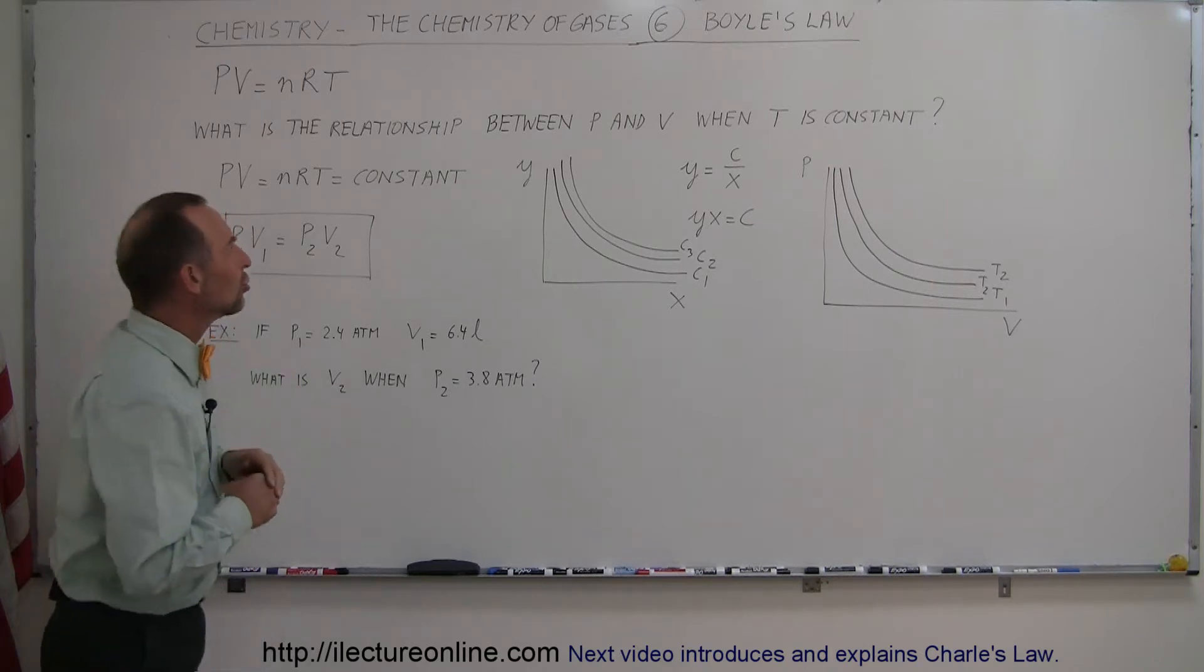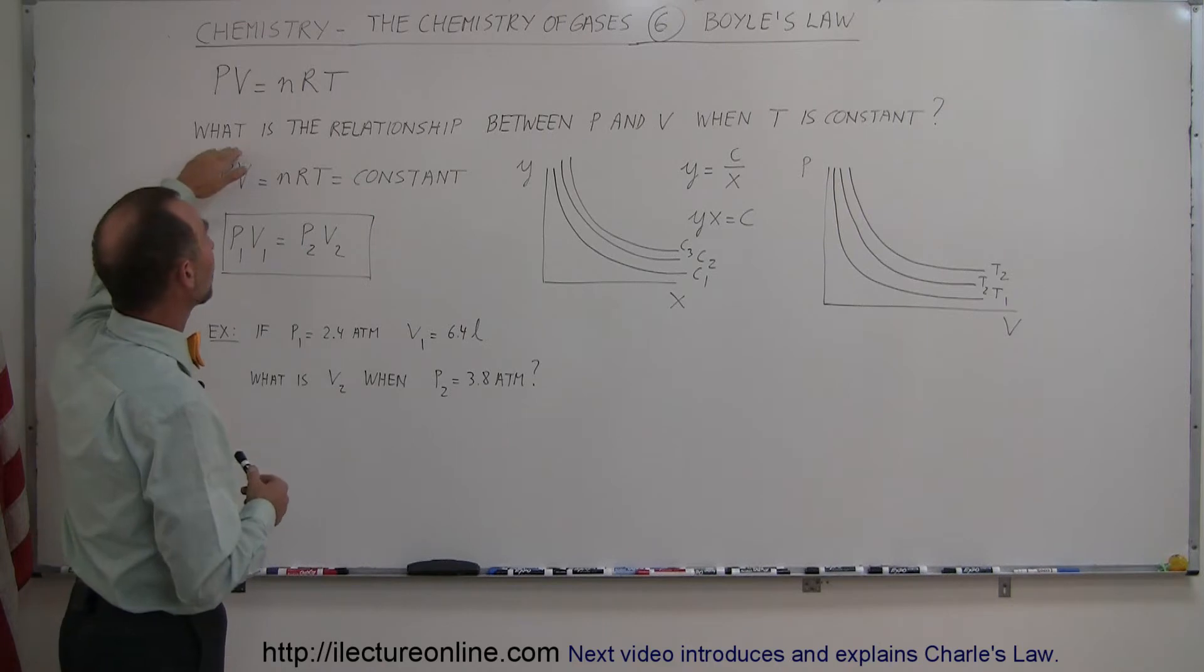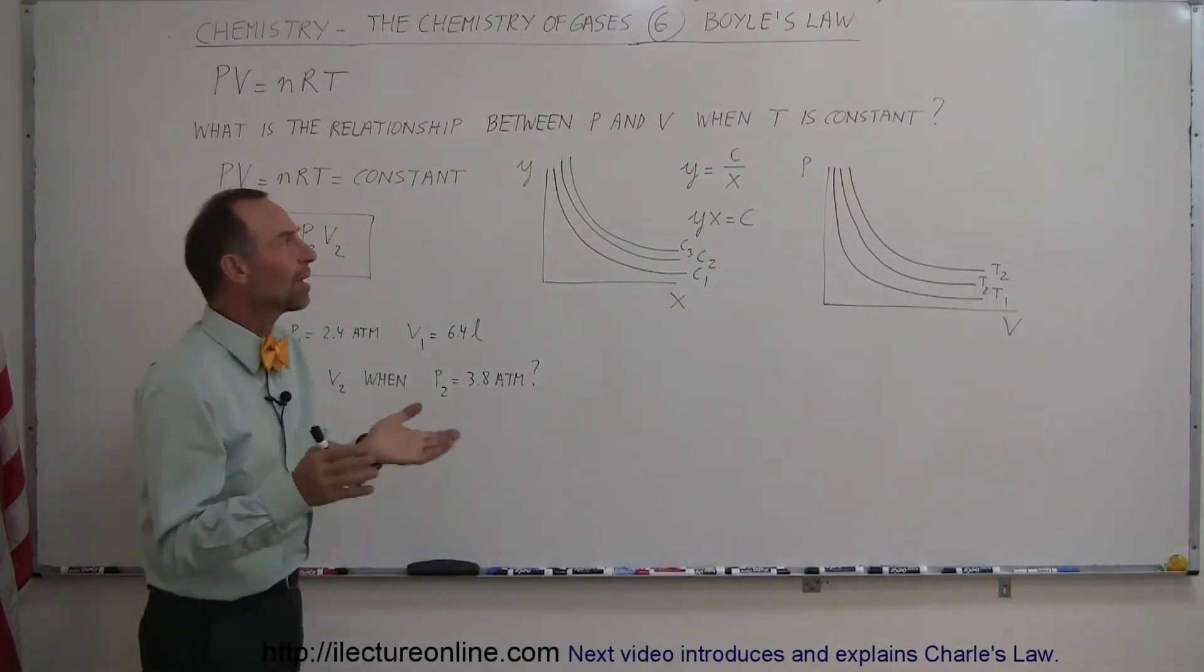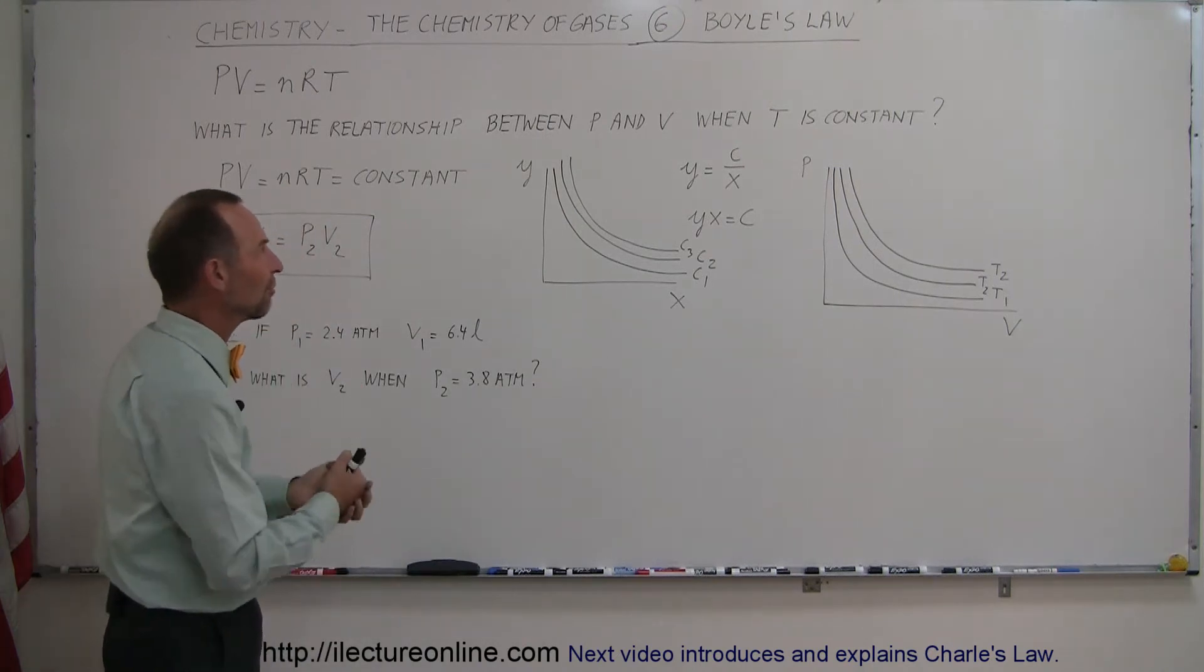With Boyle's law, we assumed, or Boyle assumed, what would be the relationship between P and V when T is constant. So the assumption is, let's say that the temperature remains constant, how does P and V relate to each other, the pressure and the volume of a gas?